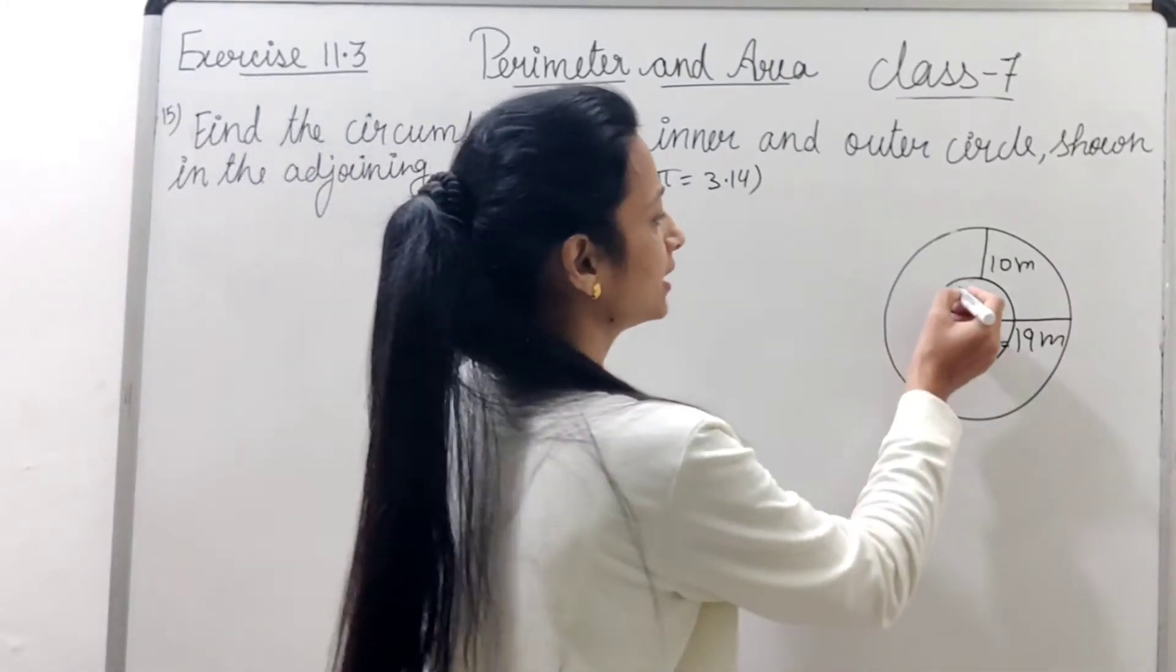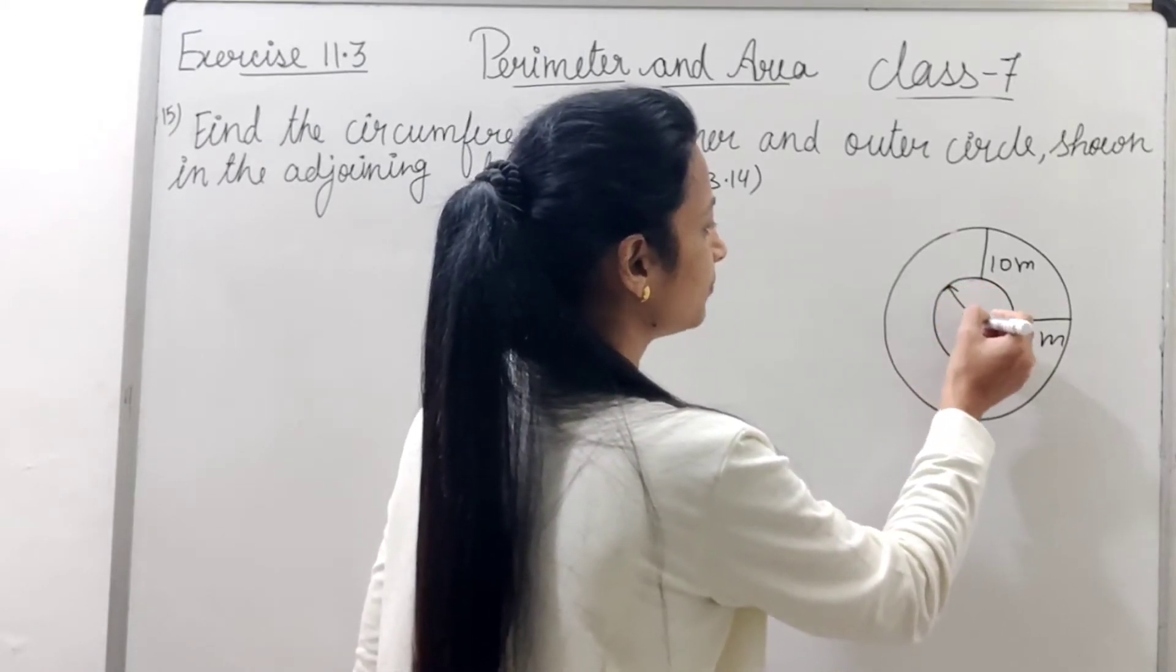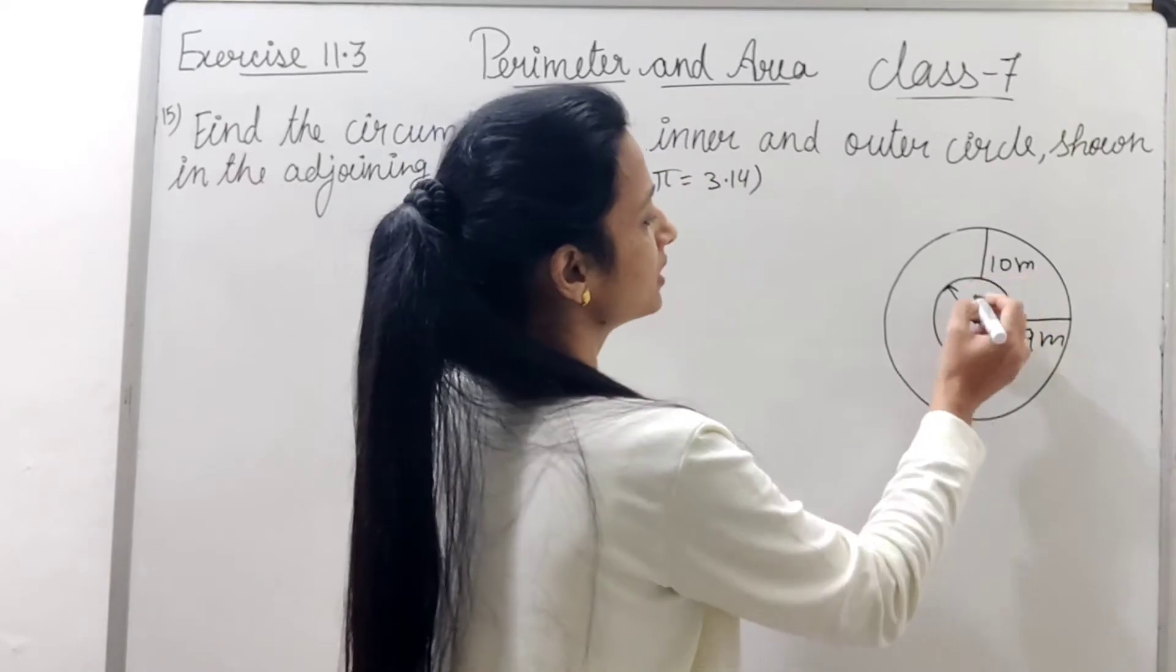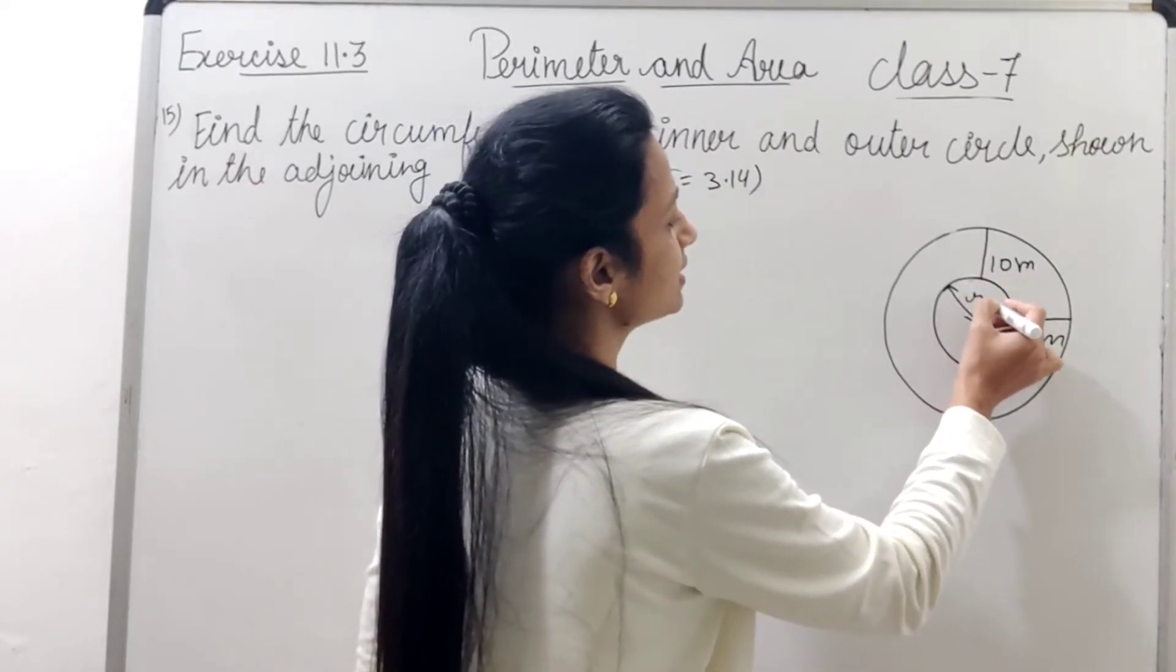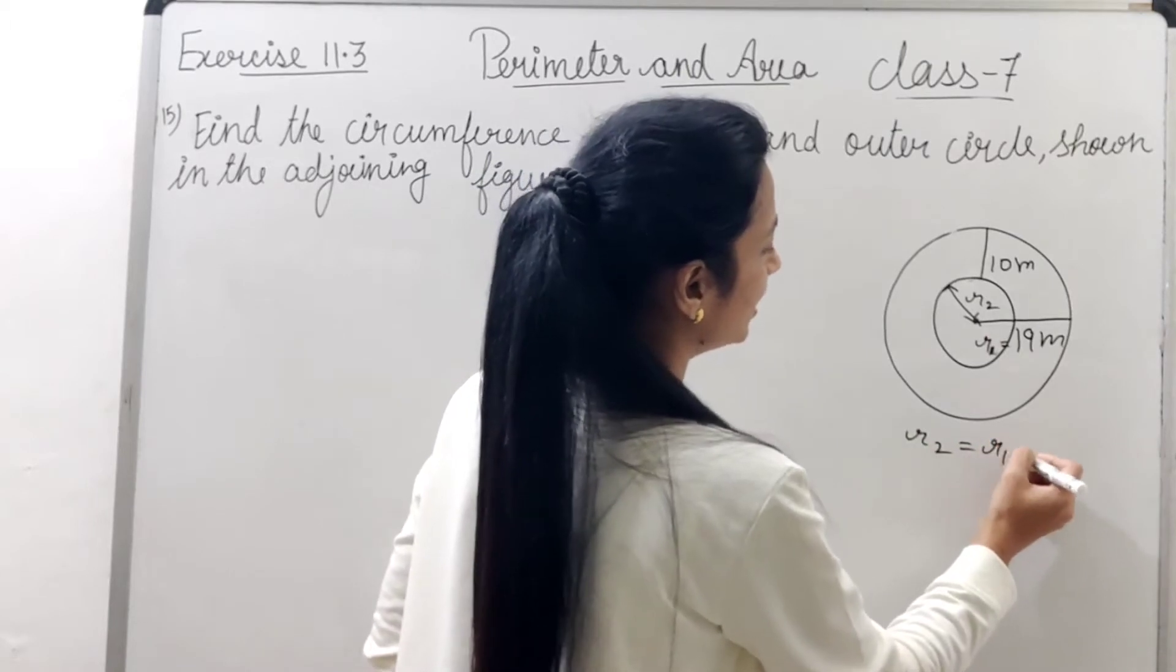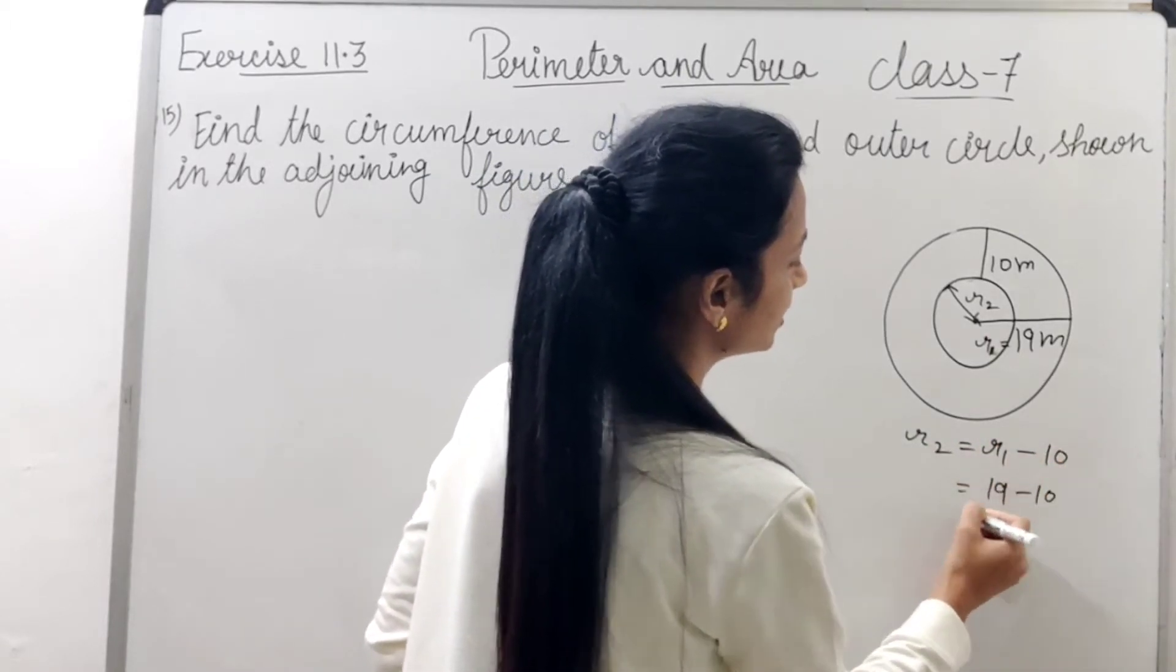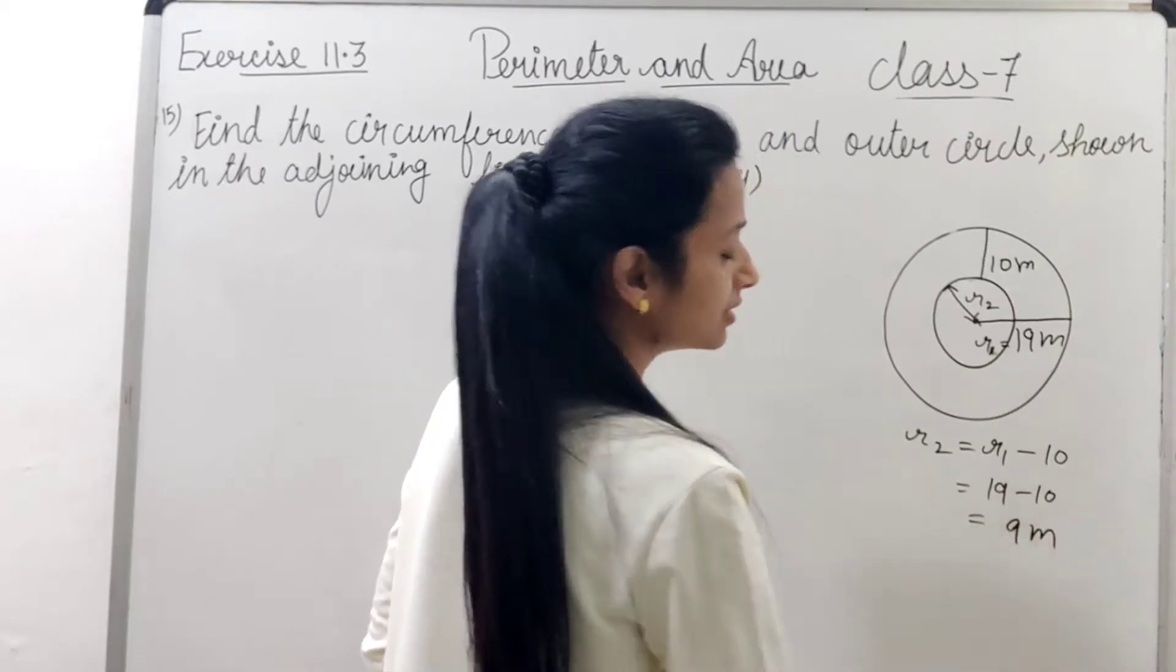So if we subtract, then we will see the inner circle radius. यह बाला मिल जाएगा और suppose अगर inner circle की radius R2 है तो R2 कितना हो जाएगा? R1 minus 10, which is 19 minus 10 equals to 9 meters. ठीक है?